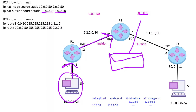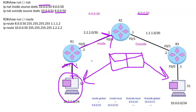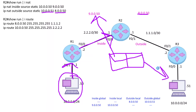So the destination was originally 8.0.0.50, and now it gets changed to 10.0.0.51. Then the other command, IP NAT inside source, translates the source: originally 10.0.0.50, it gets changed to 9.0.0.50. So now we have a packet forwarded out with a destination of 10.0.0.51 and a source of 9.0.0.50.